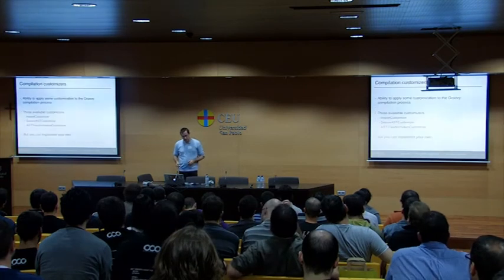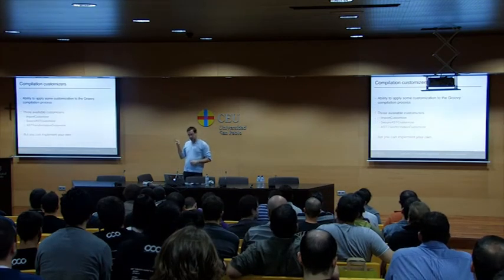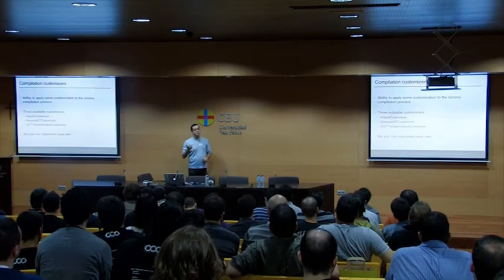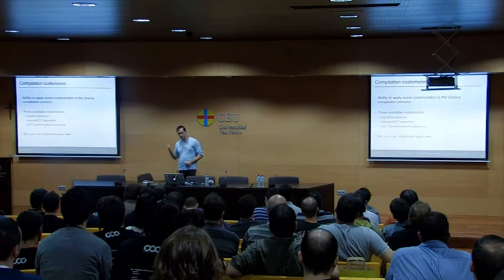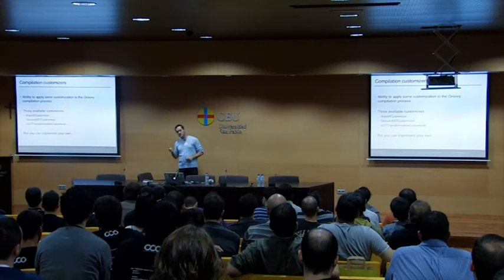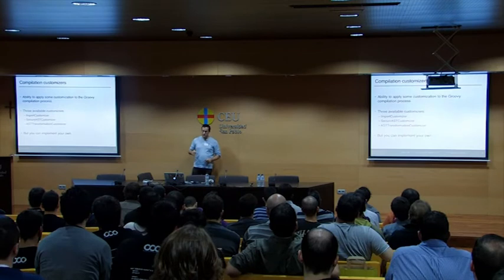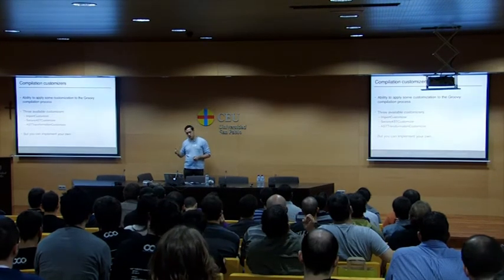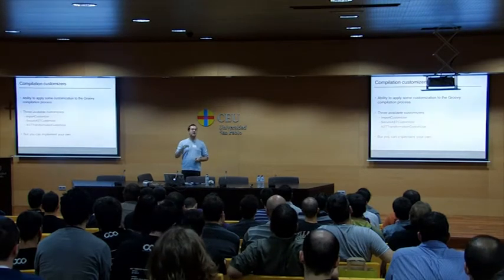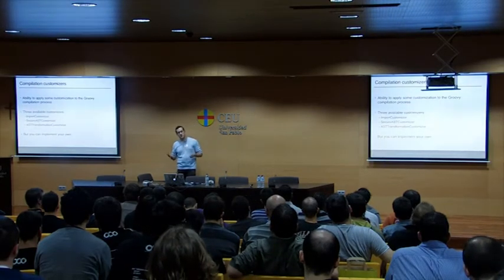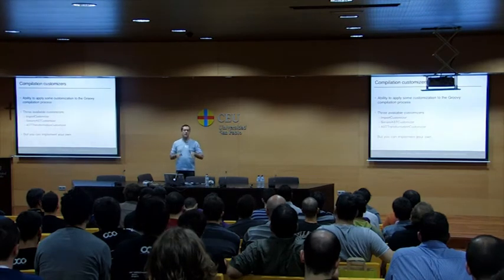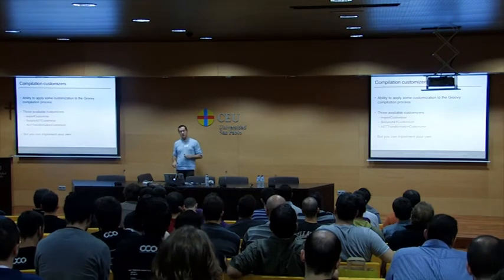We have three compilation customizers. An ImportCustomizer adds default imports in your scripts and classes. A SecureASTCustomizer secures the execution of your Groovy scripts. And an ASTTransformationCustomizer injects AST transforms — especially local transformations triggered by annotations — transparently, so the author of the Groovy script doesn't need to add them. You can also implement your own customizers.